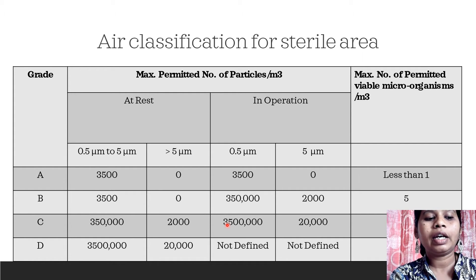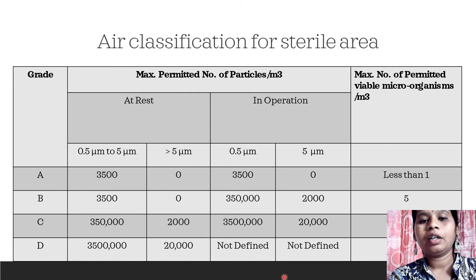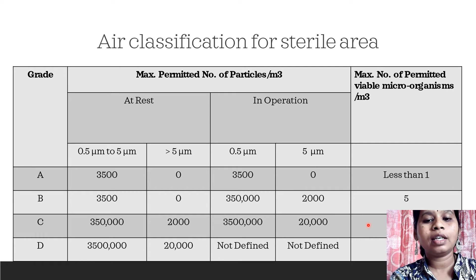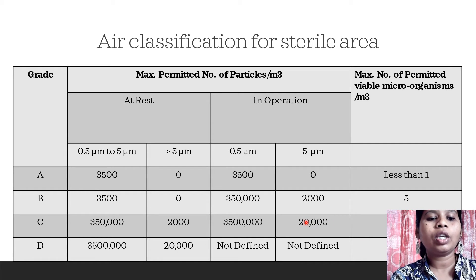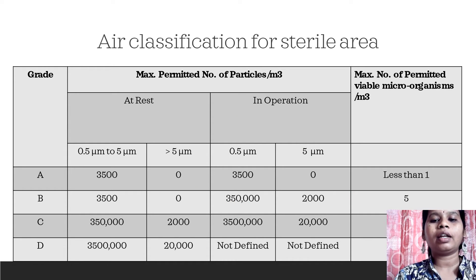Similarly, for Grade C and Grade D, the number of particles allowed at rest and in operation are increasing. For Grade D in operation, the particle limit is not defined, and the maximum number of permitted viable microorganisms for Grade C is 100 and for Grade D is 500. So different grades have different numbers of particles permitted at rest and in operation, and these standards are maintained in the manufacturing of sterile products.